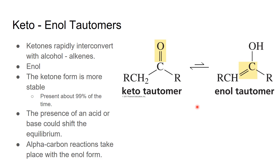Some things may stabilize the enol form, like being in an aqueous solution or introducing aromaticity. Your book does talk about that a little bit, but the presence of an acid or base can actually drive these interconversions.